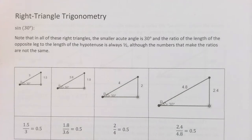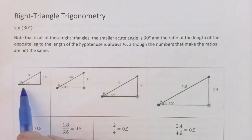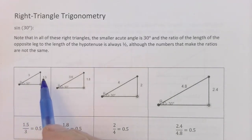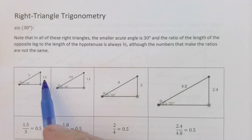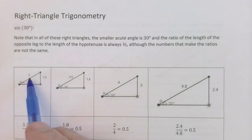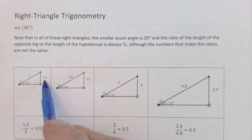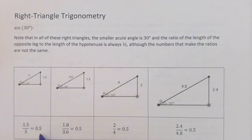The big deal with triangle similarity is that there are lots of ratios you can form and those ratios come out equal. Because right triangles are so important, we're going to give these ratios special names. For this 30-degree angle, the opposite leg measures 1.5 units, the hypotenuse is 3, and the ratio of opposite leg to hypotenuse is 1.5 to 3, which turns out to be 0.5.